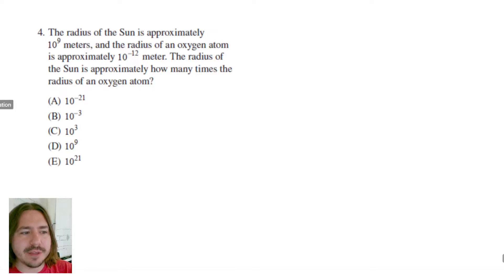It says the radius of the Sun is approximately 10 to the ninth meters and the radius of an oxygen atom is approximately 10 to the negative 12th meter. The radius of the Sun is approximately how many times the radius of an oxygen atom?